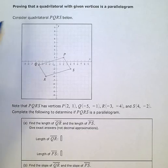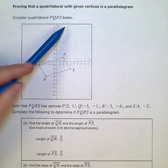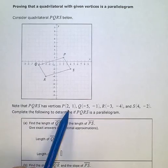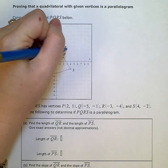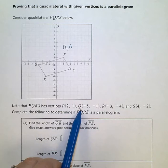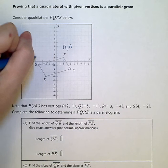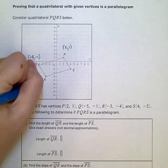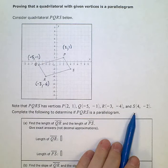We're proving that a quadrilateral with given vertices is a parallelogram. Consider quadrilateral PQRS, which has vertices at these coordinates: P is at (2, 1), Q is at (-5, -1), R is at (-3, -4), and S is at (4, -2).